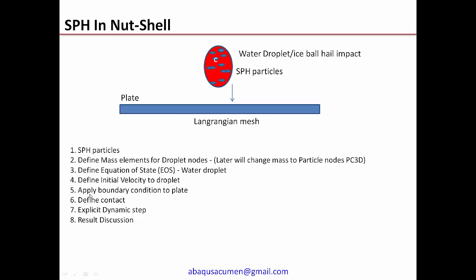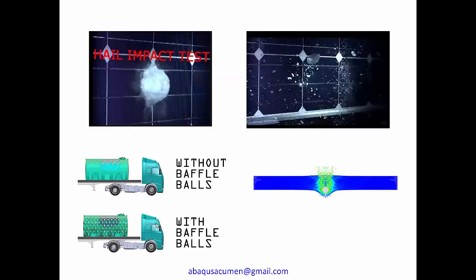You then apply boundary conditions to the plate, define contact between the SPH particles and the Lagrangian mesh, and solve the event in explicit dynamic steps. You can then view the simulation and extract results. This is how SPH looks in a nutshell — regardless of the complexity, you need to fit into this overall approach.